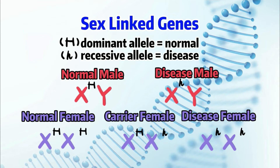Take note: this carrier female does not actually have the disease because she has one dominant allele. However, one of the X chromosomes carries the recessive allele — that's why it's called a carrier female, because she still carries the disease. Therefore, this disease allele might be passed on to her children. For the female with disease, both X chromosomes carry the recessive allele.